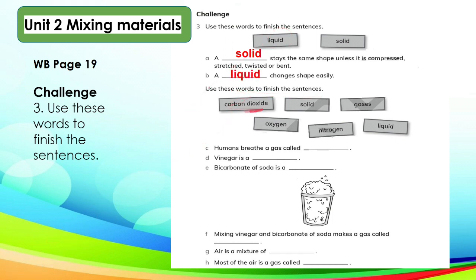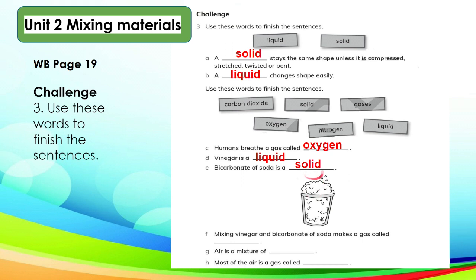Now use these words to finish the sentences: carbon dioxide, solid, gases, oxygen, nitrogen, liquid. Letter C: humans breathe a gas called oxygen. That is correct. Letter D: vinegar is a liquid. Letter E: bicarbonate of soda — also known as baking soda — is a solid. Bicarbonate of soda is an ingredient used for cooking or household cleaning, and also used to treat acid indigestion and heartburn. Letter F: mixing vinegar and bicarbonate of soda makes a gas called carbon dioxide. Carbon dioxide is a colorless, odorless gas made up of carbon and oxygen.